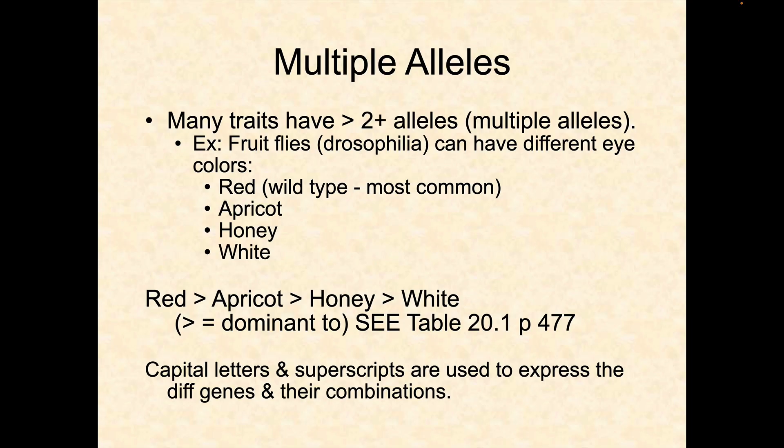Multiple alleles — many traits have more than one set of alleles. For example, fruit flies can have different eye colors: red, apricot, honey, and white.